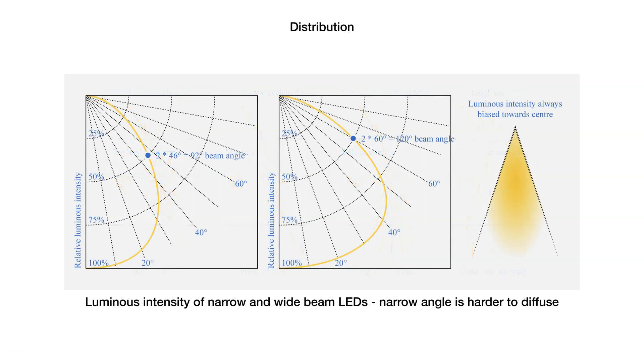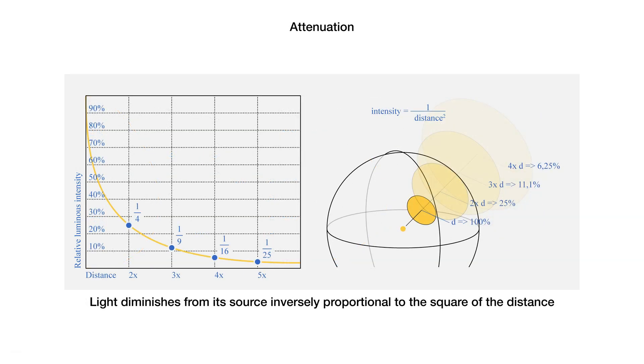When you want to diffuse light emitted by one or more LEDs, you need to consider the beam angle. An LED which emits its total lumen output across a narrow beam angle is much harder to diffuse over short distances. You cannot increase the distance between LED and diffuser arbitrarily, because light diminishes from its source inversely proportional to the square of the distance. In other words, doubling the distance between light source and illuminated target attenuates the illumination to only a quarter of the original value.